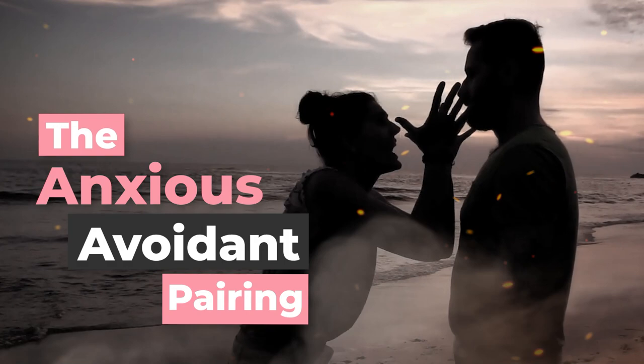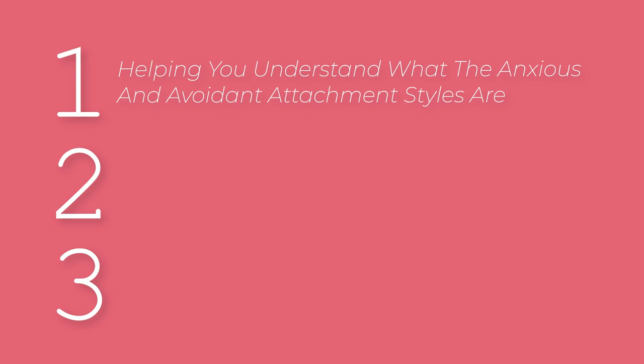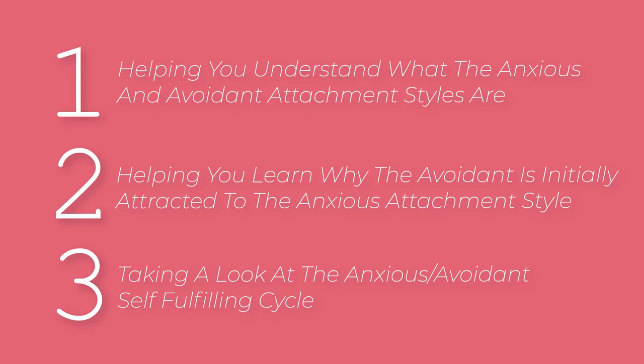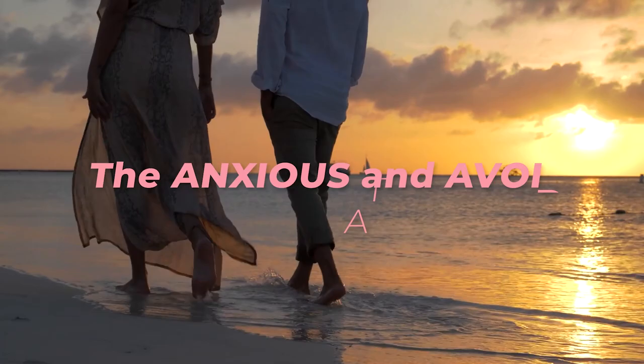Today, we're going to look at one of the most common attachment pairings that we see in our coaching practice: the anxious and the avoidant pairing. We're going to do this by looking at the attachment pairing from a lens of three different categories. Number one, we want to help you understand what the anxious and avoidant attachments actually are. Number two, why those two attachment styles are really attracted to one another. And number three, we want to take a look at the avoidant-anxious self-fulfilling cycle that they end up getting caught in. So let's just begin.